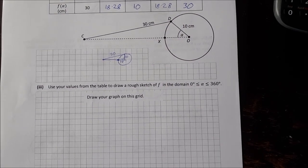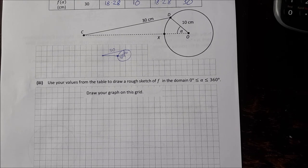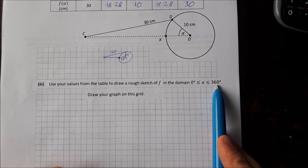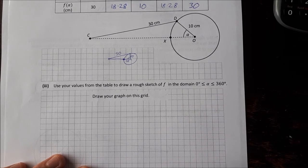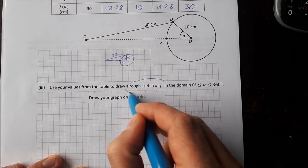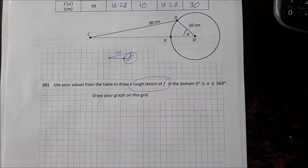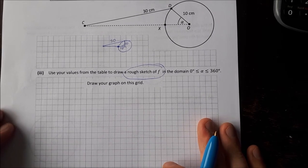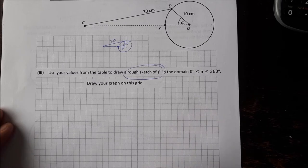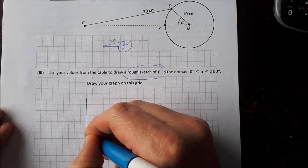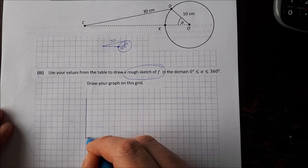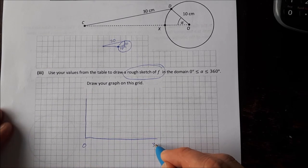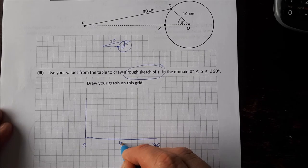Part 3 then, use your values from the table to draw a rough sketch of F in the domain 0 less than or equal to alpha less than or equal to 360 or 0 to 2 pi. Important thing here is that it actually just says a rough sketch of F so you don't need to be too artistic, a rough sketch will do. I would use a ruler for my x and y axis, I don't have one handy so a sketch is all you're going to get from me.